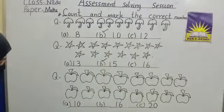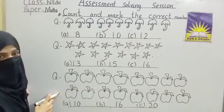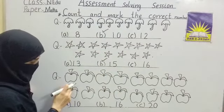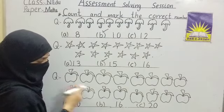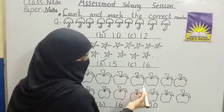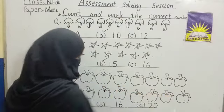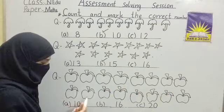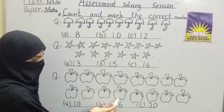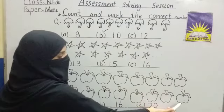Now question number three: how many apples are there? Count with me. One, two, three, four, five, six, seven, eight, nine, ten, eleven, twelve, thirteen, fourteen, fifteen, sixteen.